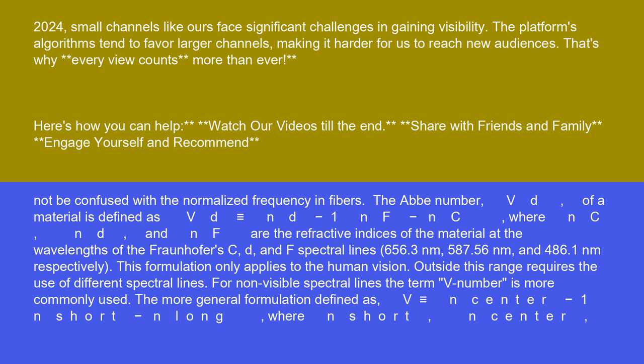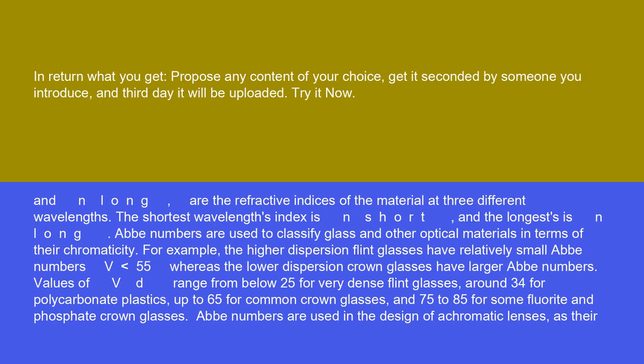This formulation only applies to human vision. Outside this range requires the use of different spectral lines. For non-visible spectral lines, the term V-number is more commonly used. The more general formulation defined as V equals (NCENTER minus 1) divided by (NSHORT minus NLONG), where NSHORT, NCENTER, and NLONG are the refractive indices of the material at three different wavelengths. The shortest wavelength's index is NSHORT, and the longest is NLONG.